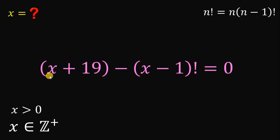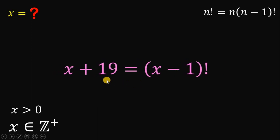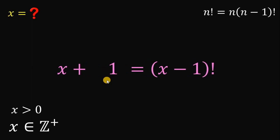Now, we have this equation x plus 19 minus x minus 1 factorial equals 0. So let's solve for the value of x. First thing we need to do here is to rearrange some terms a little bit. And then, this 19 can be written as 20 minus 1.